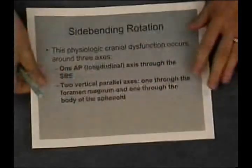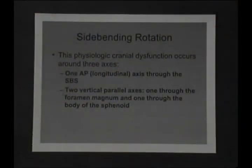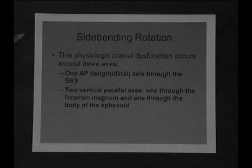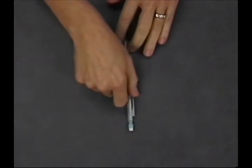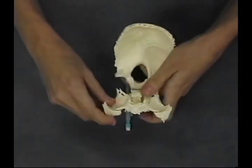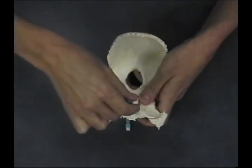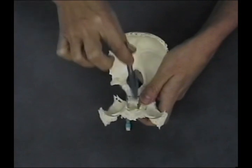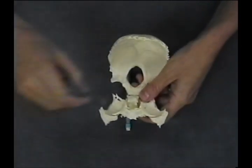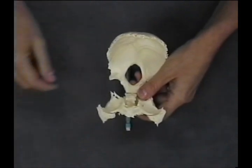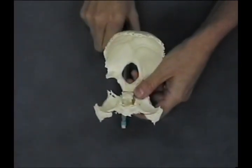Now we're going to look at the side bending rotations. On a side bending rotation, we're talking about three axes: one longitudinal AP axis, the same axis we just discussed going through the SPS from front to back, and then two vertical parallel axes — one through the foramen and one through the body of the sphenoid. Rotation is going to be in opposite directions along these two vertical parallel axes and in the same direction around this one AP axis.